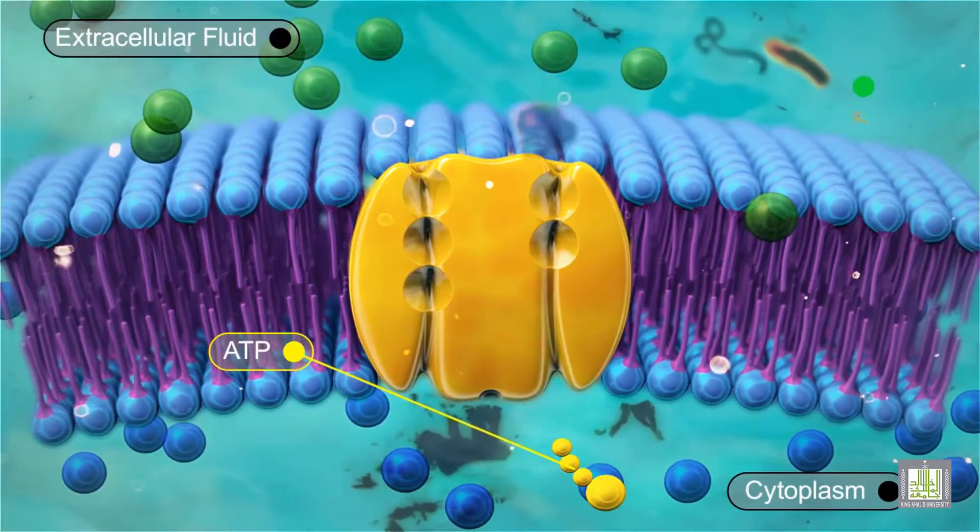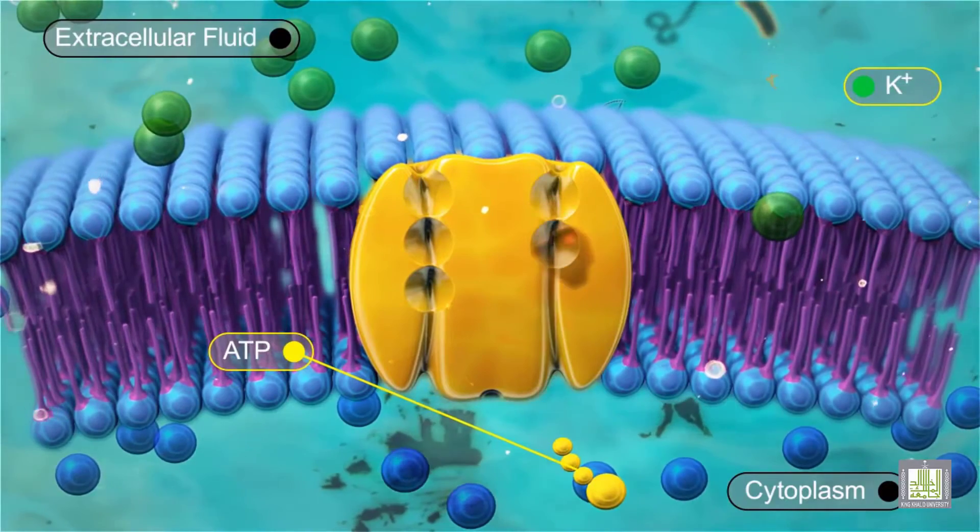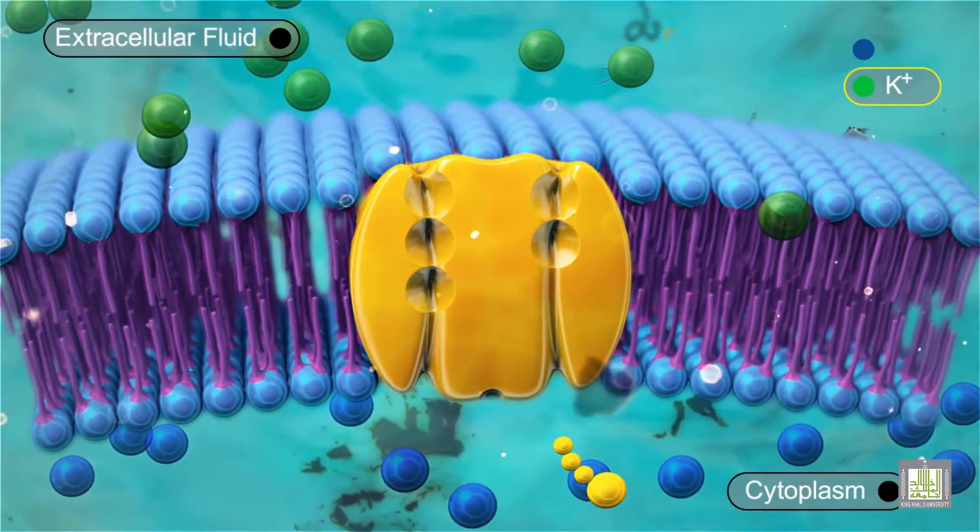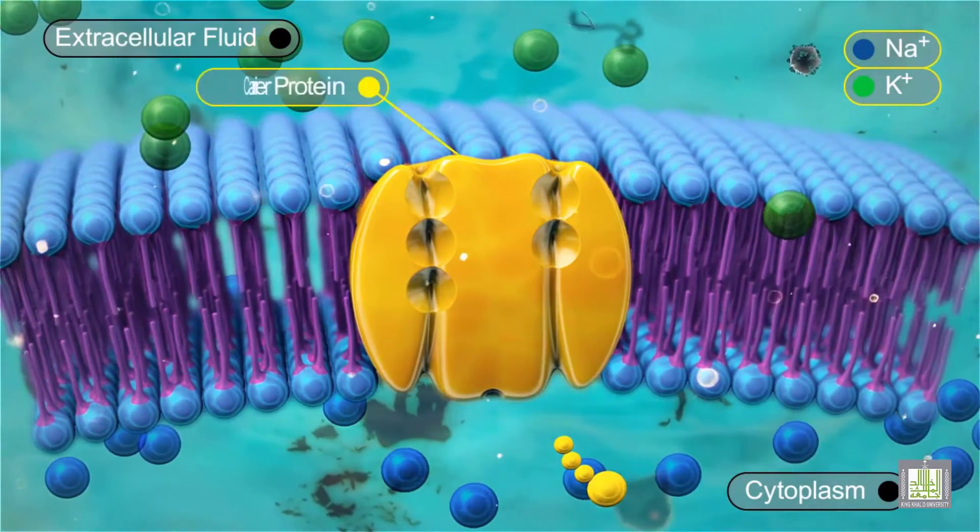The sodium-potassium exchange pump moves sodium ions, Na+, out of the cell and potassium ions, K+, into the cell.